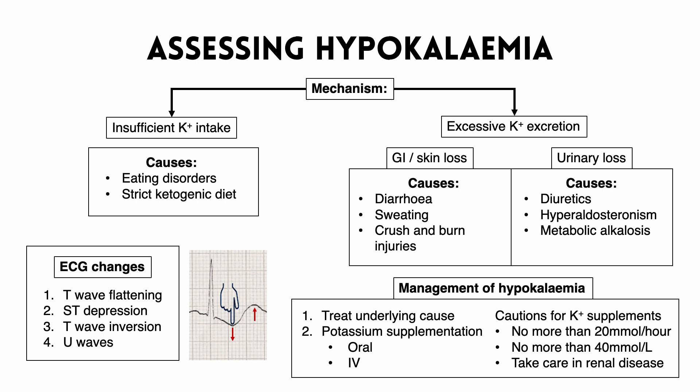Secondly, once we've addressed the underlying cause, we want to think about supplementing the patient with potassium. This should always be the second line option as there is always a risk of causing hyperkalemia from giving too much potassium too quickly. If we do give potassium, we want to give the minimum amount via the safest route possible. The first line route is oral potassium supplementation, but if we can't do that or the hypokalemia is very severe, then we want to think about IV potassium supplementation.